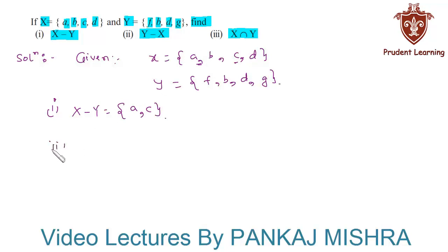Next we need to find y minus x. This means set of all the elements that are there in y but not in x. So the elements that are there in y but not in x are f and g.